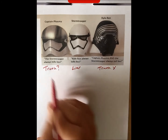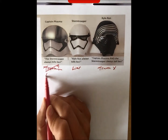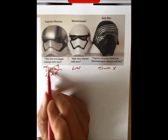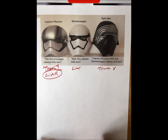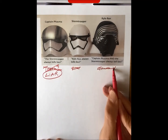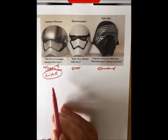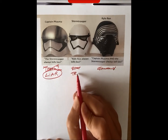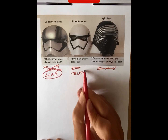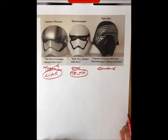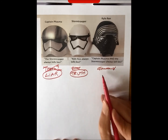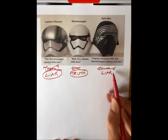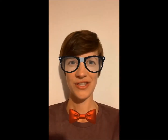But Kylo Ren said that they're both telling lies, and that's just not true. So that means our original assumption was wrong and Captain Phasma is a liar. Once we know that Captain Phasma is a liar, the stormtrooper must be telling the truth, and if the stormtrooper is telling the truth, then Kylo Ren is also a liar. So well done if you got that one — stormtroopers are trustworthy, who knew!